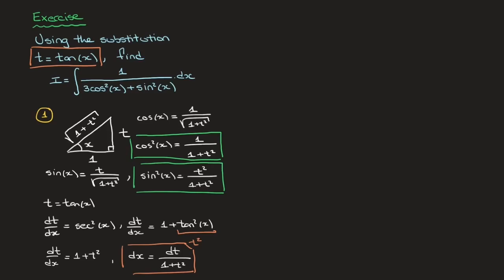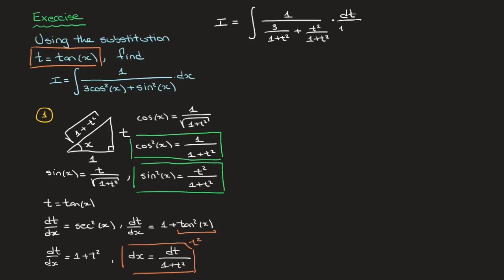Now that we've found expressions for cosine squared of x, sine squared of x, and dx in terms of t, we can rewrite our integral in terms of t. We state that I equals the integral of 1 over 3 cosine squared of x — which turns into 3 times 1 over 1 plus t squared, giving 3 over 1 plus t squared — plus sine squared of x, which is t squared over 1 plus t squared, times dx, which is dt over 1 plus t squared. That's step one done.